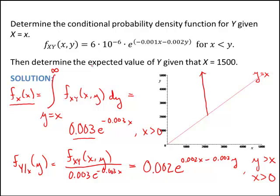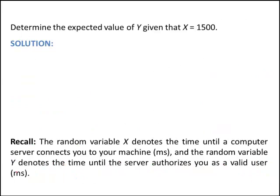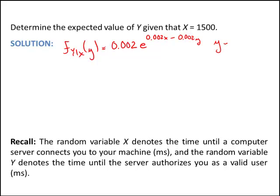The last thing we want to do is find the expected value of y given x is 1500. Let's remember what f of y given x is. F of y given x is equal to 0.002 e to the 0.002x minus 0.002y, for y greater than x and x greater than 0.